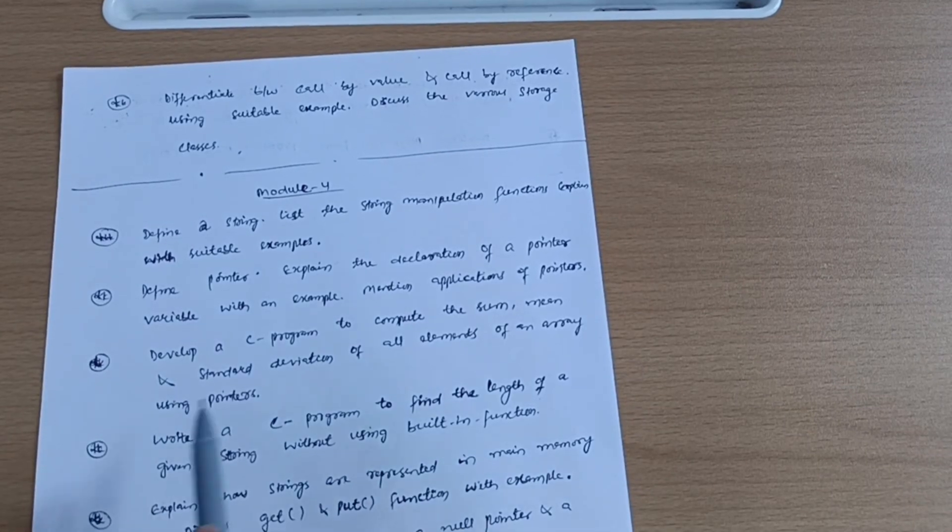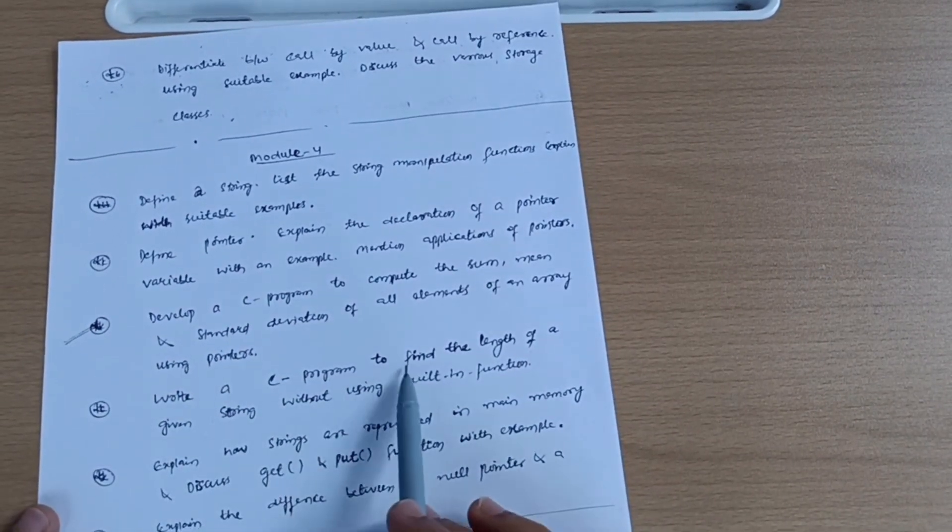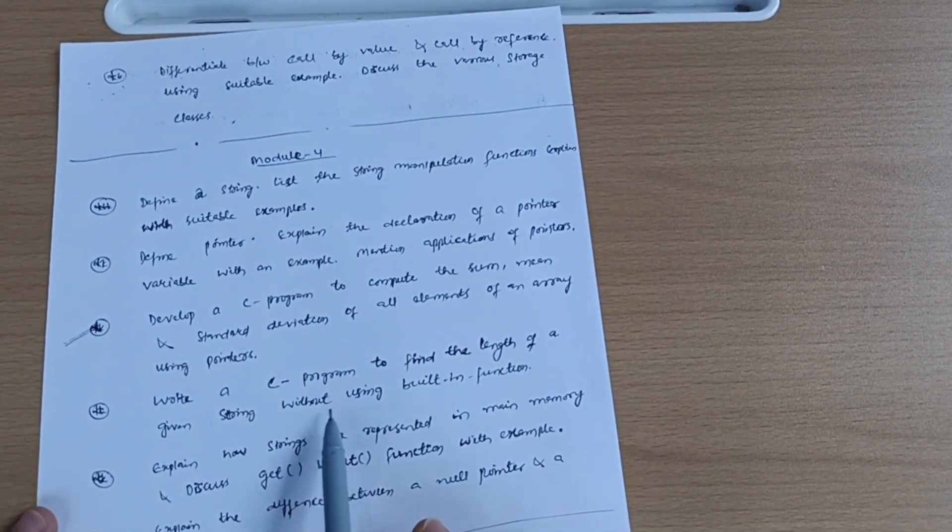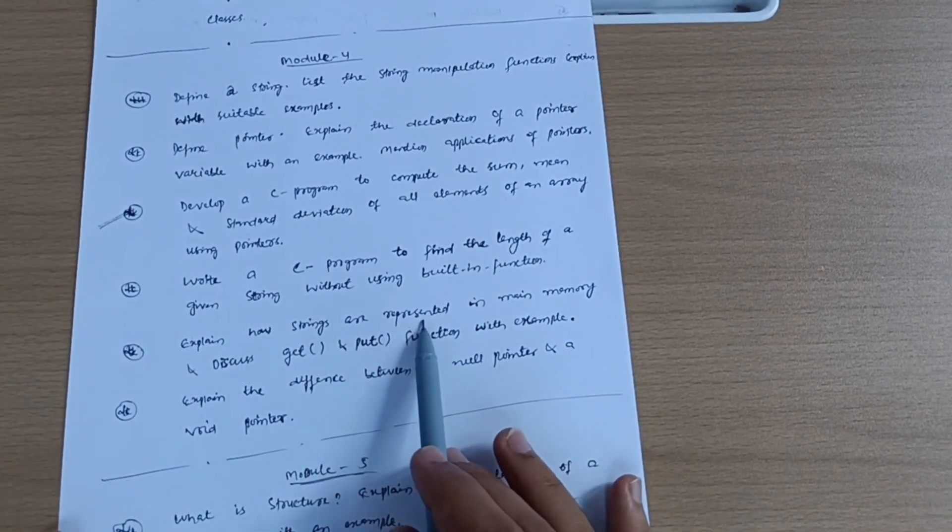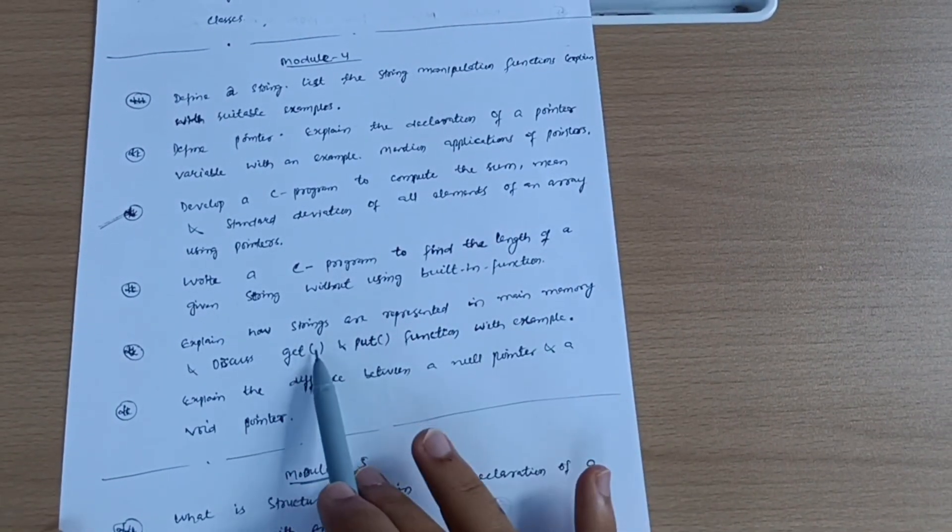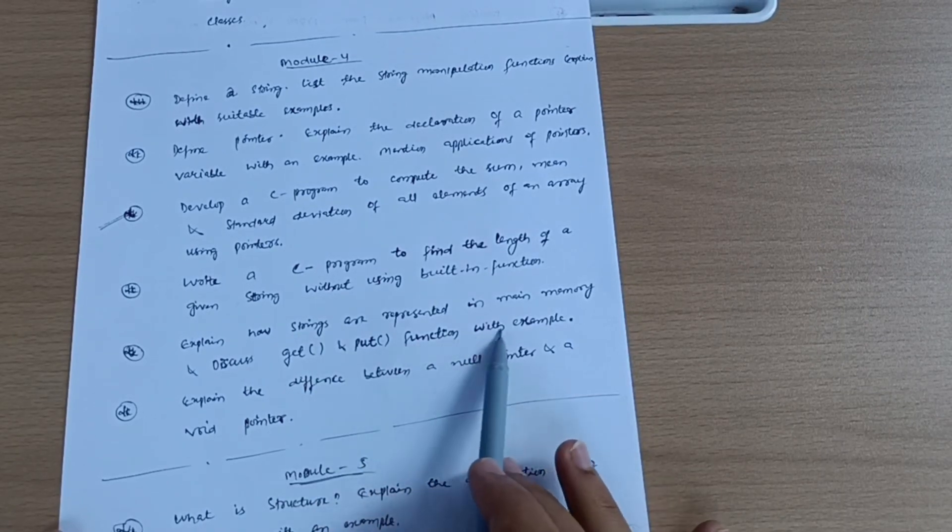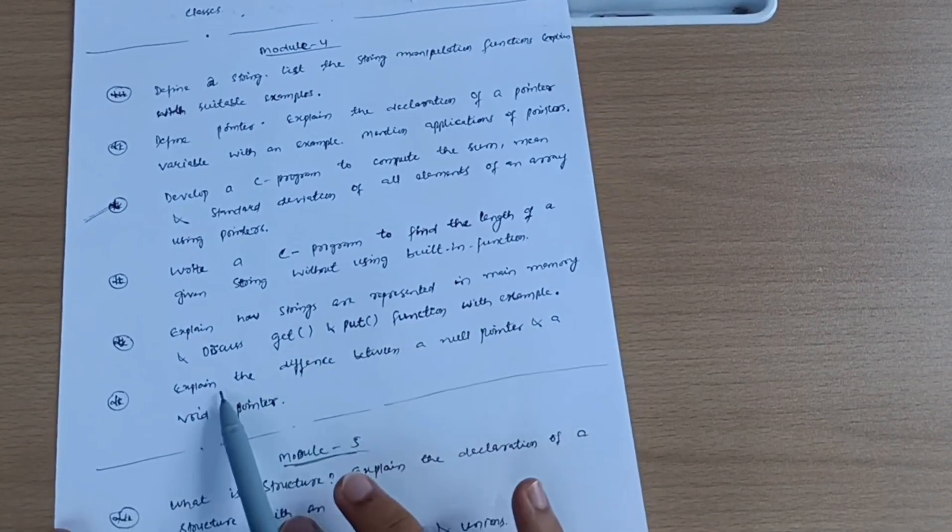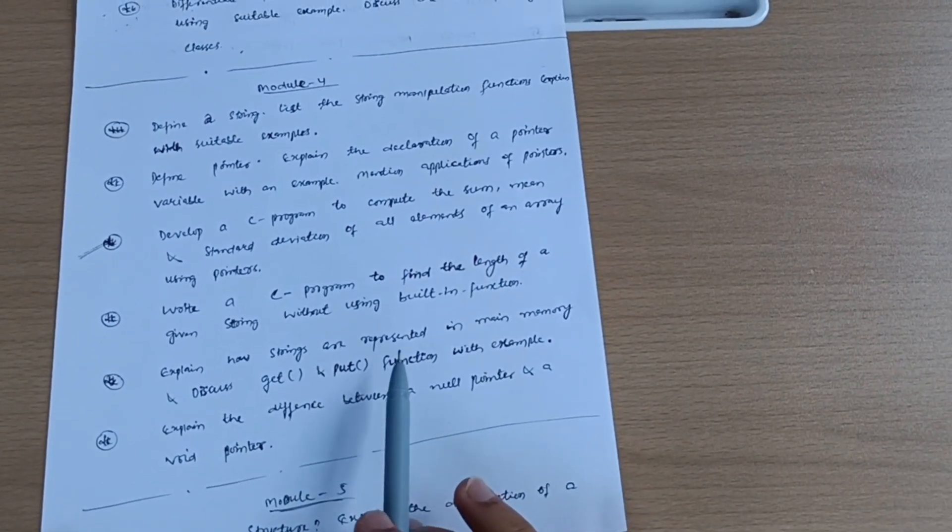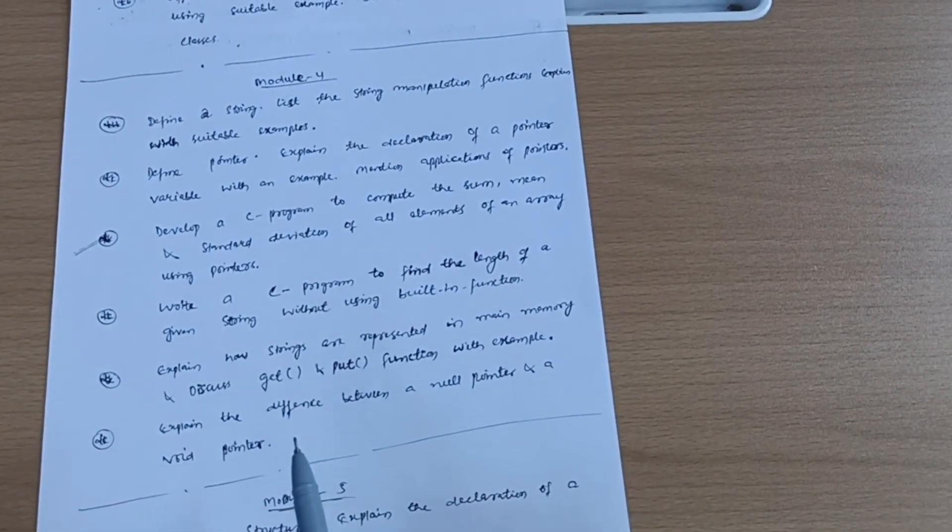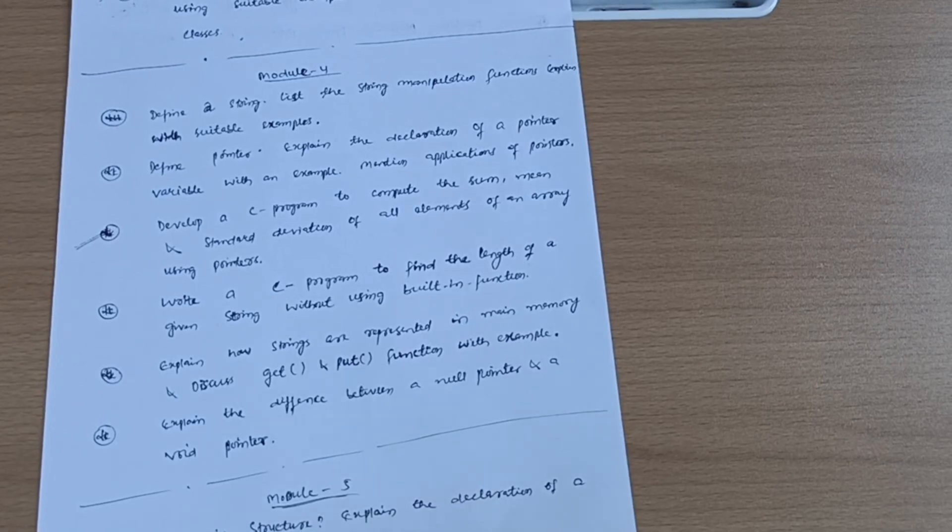Write a C program to find the length of a given string without using built-in functions. Explain how strings are represented in memory and discuss getch and putch functions with example. Last is explain the difference between a null pointer and a void pointer. Some theoretical questions are there and some programmatic questions are there which you have to go through.